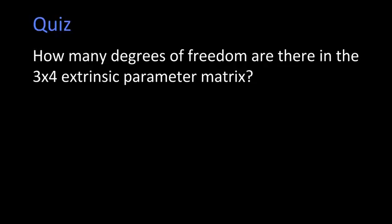That brings us to an interesting quiz. How many degrees of freedom are there in the three by four extrinsic parameter matrix? So 12, there are 12 numbers. B, 6. C, 9. Or D, 3.